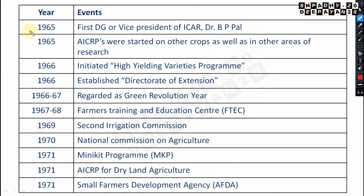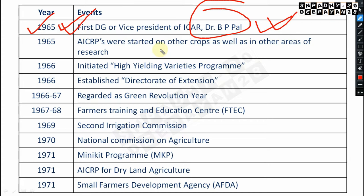In 1965, the first Director-General (or Vice President) of ICAR was Dr. B. Viswanath — very very important; a question may come in the exam. Also in 1965, All India Coordinated Research Projects (AICRPs) were started on other crops and other areas of research.